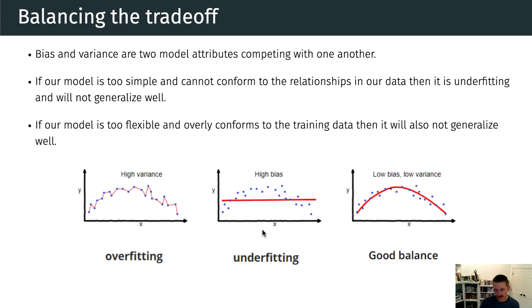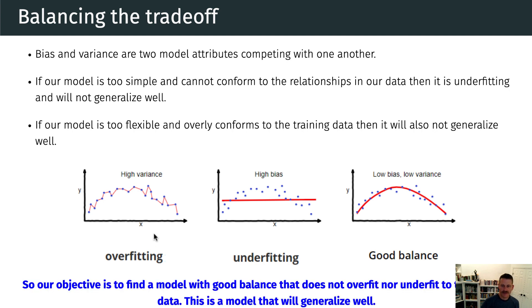So in both cases, the underfitting and the overfitting models or the high bias, high variance models, they're not going to generalize well to unseen data, but for two different reasons. One is because the model doesn't conform to the shape or the relationships very well. And the other one is because we're chasing individual data points in our training set. So our objective here is to find a model with good balance that does not overfit nor underfit to the training data. And that's what we see here on the right.